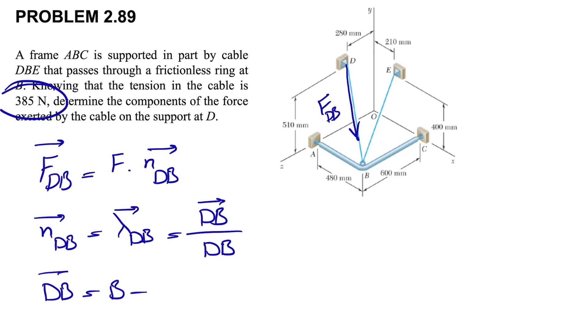We need to find DB vector and the magnitude of DB. One easy way to do this is to find the coordinates of B and D. Coordinates of B minus D would give us the vector DB.